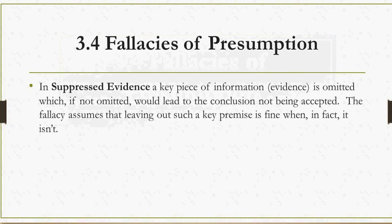The last fallacy is suppressed evidence. In suppressed evidence, a key piece of information — specifically evidence, which is a specific type of information — is omitted or left out. If it were not omitted, it would lead to the conclusion not being accepted. At the level of assumption, what the person assumes is that leaving out such a key premise is fine or okay, when in fact it isn't.